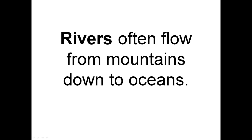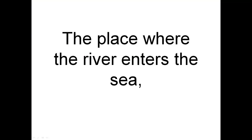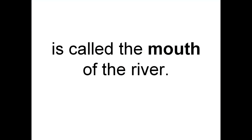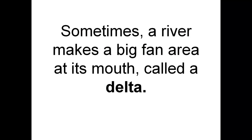Rivers often flow from mountains down to oceans. The place where the river enters the sea is called the mouth of the river. Sometimes a river makes a big fan area at its mouth called a delta.